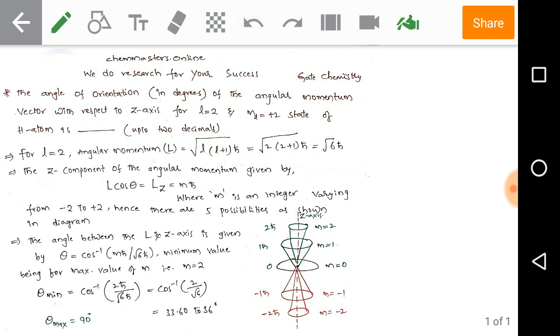For L equals 2, the angular momentum L has the formula square root of L times L plus 1 times h-bar. Here we have the value L equals 2 as given in the problem. Just substitute it. We get square root of 6 h-bar.